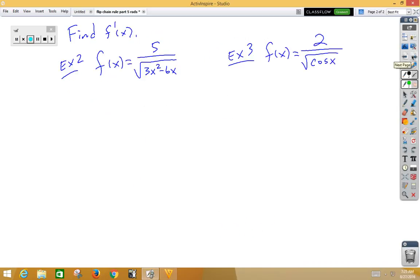In our second example, again, we're going to want to think of this as 5 times 3x squared minus 6x to the negative 1 half power.